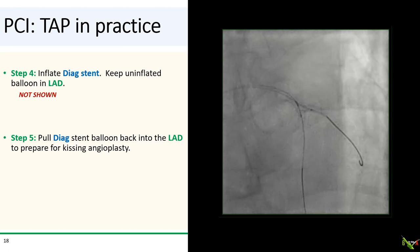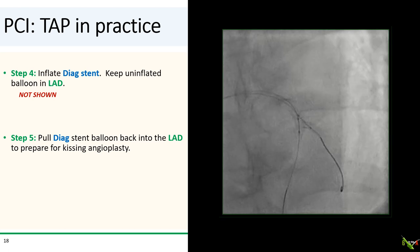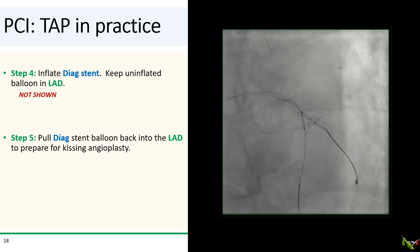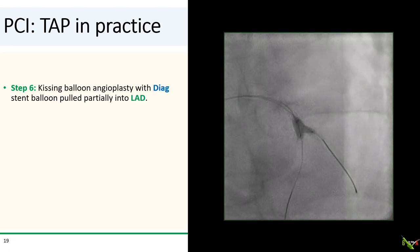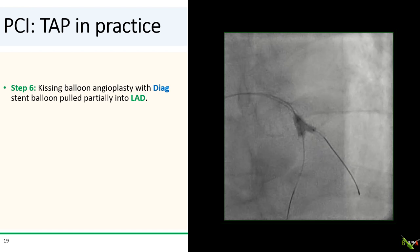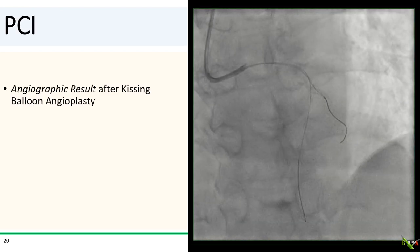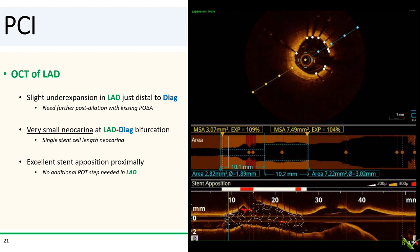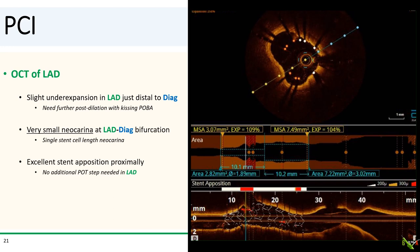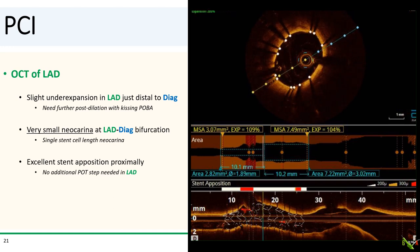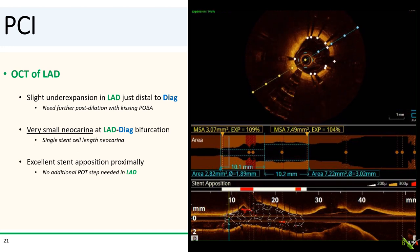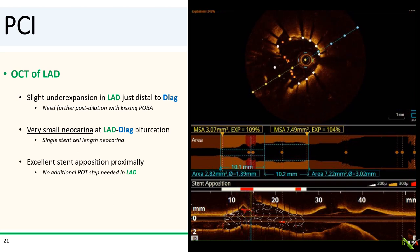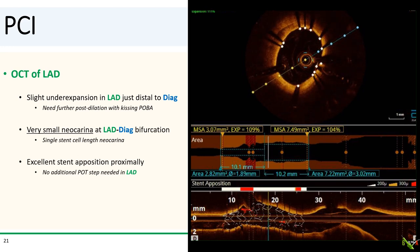In step four, we inflated the diagonal stent while keeping the LAD balloon uninflated. In step five, we pulled the diagonal stent balloon slightly back into the LAD to prepare for kissing balloon angioplasty. In step six, we performed kissing balloon angioplasty of the LAD and the diagonal. OCT showed a slight underexpansion in the LAD just distal to the origin of the diagonal — there was likely a post-stenotic aneurysmal change there, so we needed a bit more post-dilation with kissing angioplasty. The good news is that the neocarina at the LAD-diagonal bifurcation was very small, probably not more than one stent cell in length.